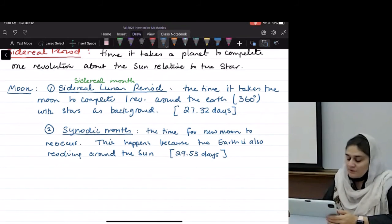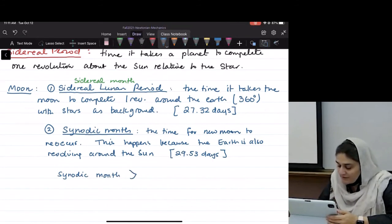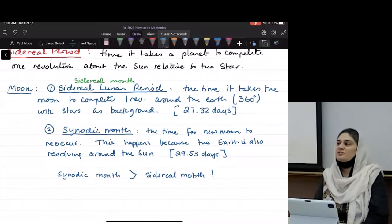So the synodic month is bigger than sidereal month by about two days.